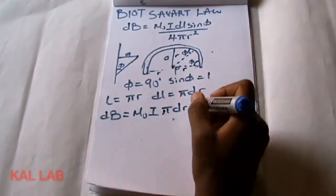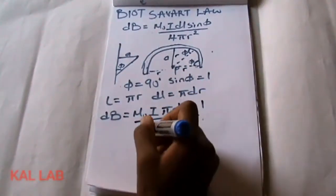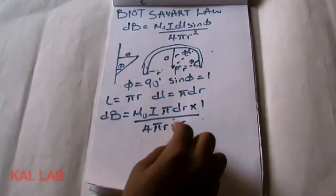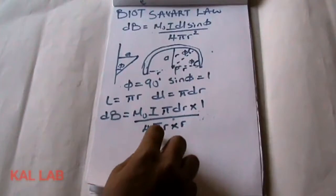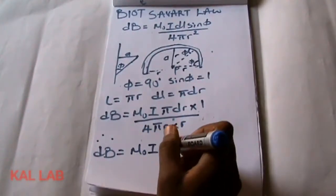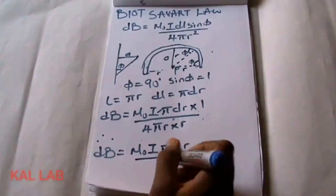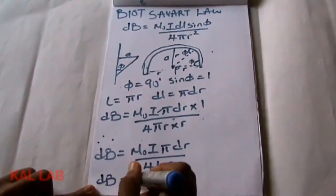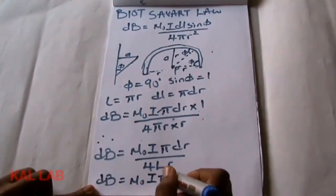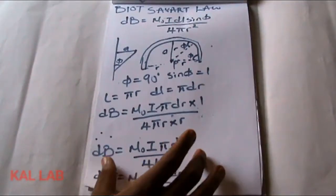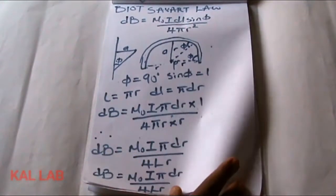Now let's substitute all of this into our equation. We get dB equal to μ₀ I dL, which is π dr, with sin φ equal to 1, divided by 4π r². We know that r times r is r squared, but here we see that π and r — if we separate them, π r equals r, so therefore B would be equal to μ₀ I π dr divided by 4Lr. So at this point B equals μ₀ I π dr over 4Lr, and we now have to integrate.